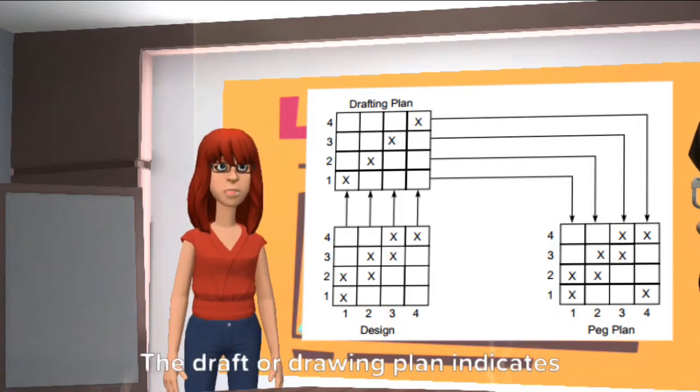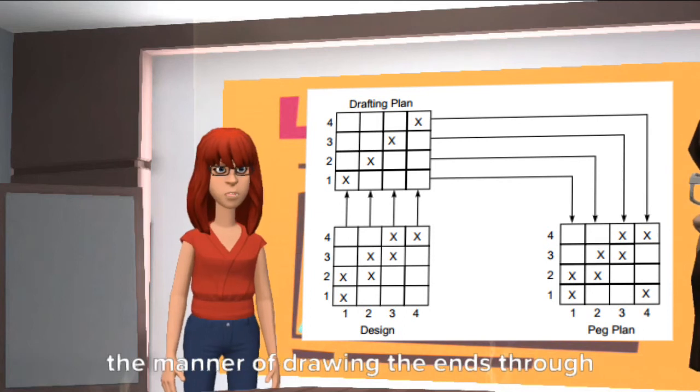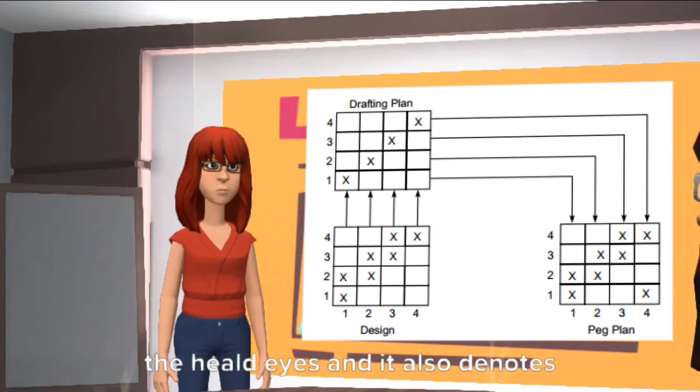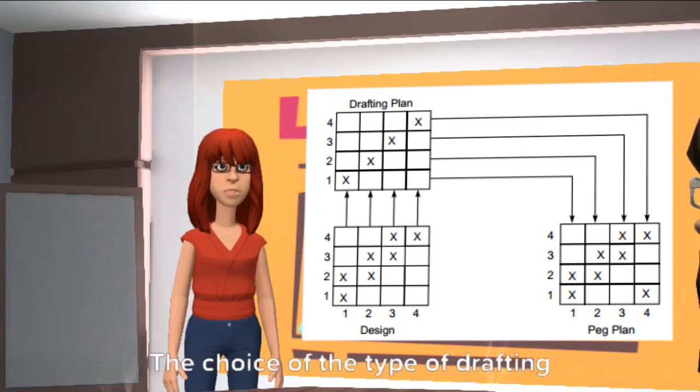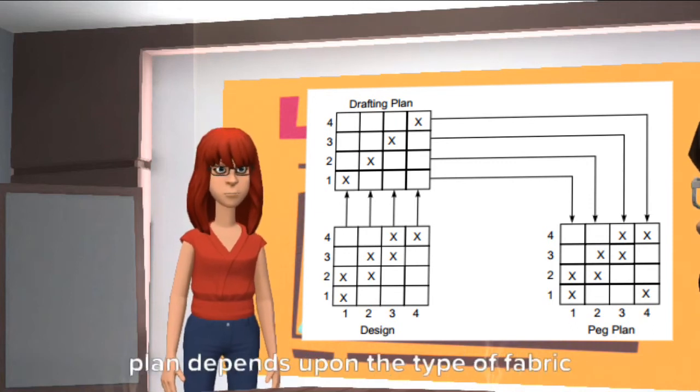The draft or drawing plan indicates the manner of drawing the ends through the heald eyes, and it also denotes the number of heald shafts required for a given weave repeat. The choice of the type of drafting plan depends upon the type of fabric woven.